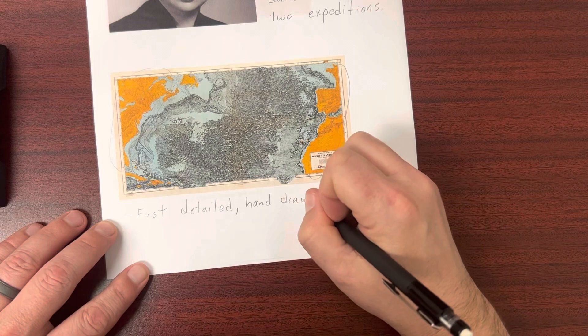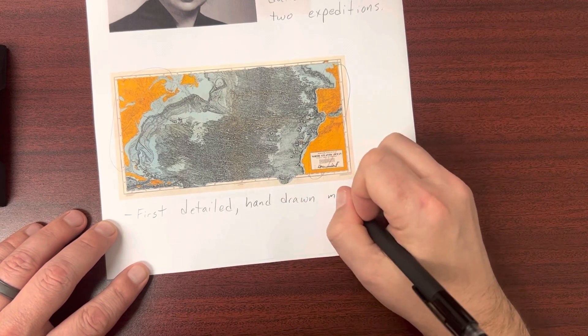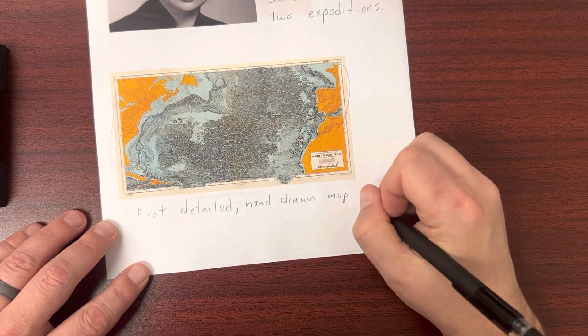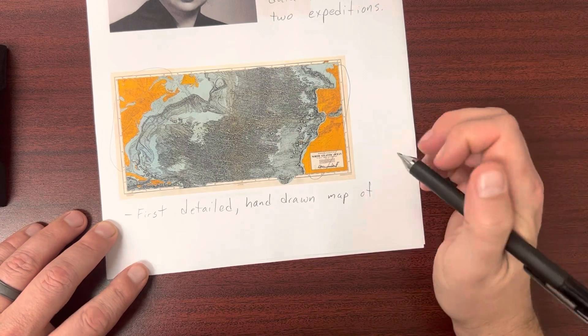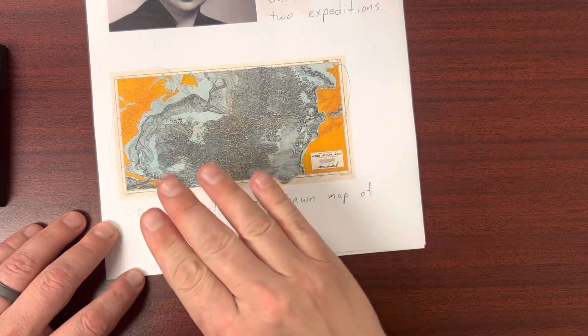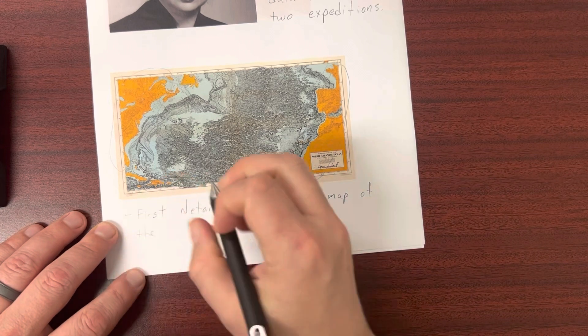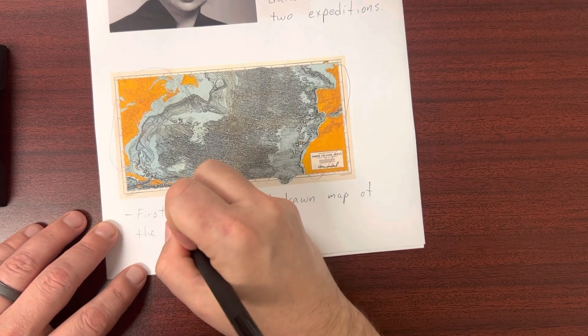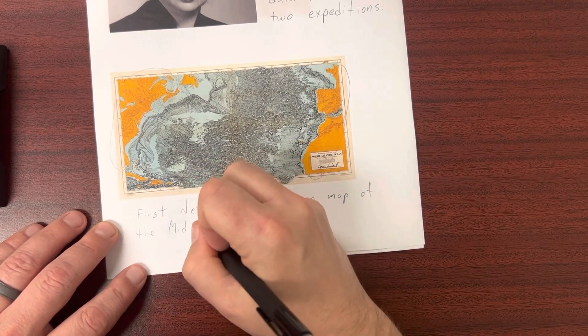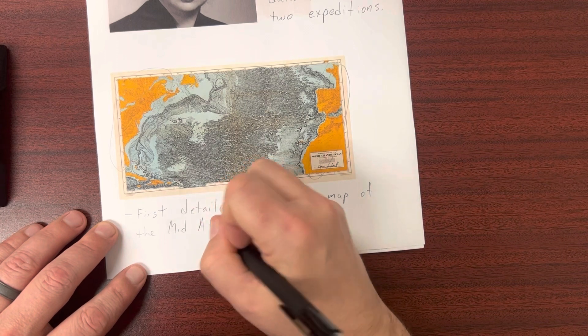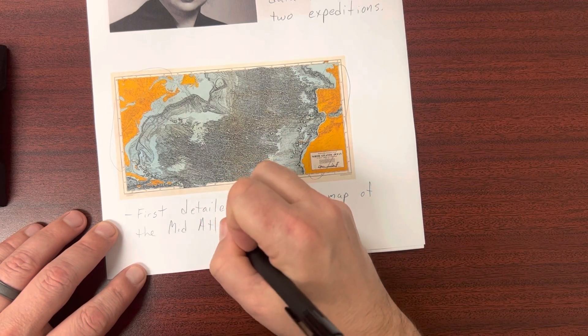She only hand drew it once she was able to go through all the data and align it properly, showing the different elevation changes on the seafloor of the Atlantic. And what she saw was this huge underwater mountain chain.